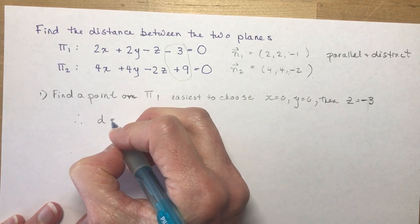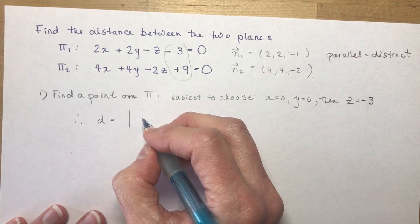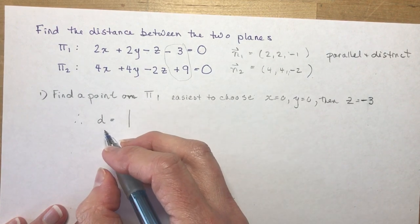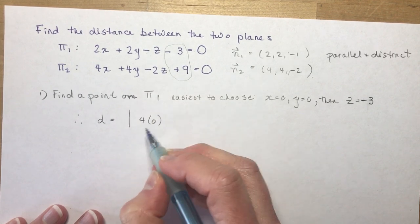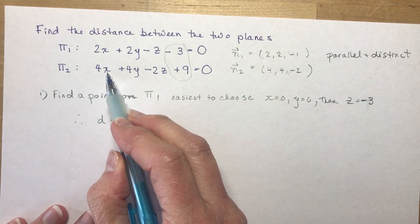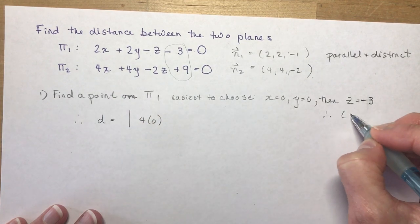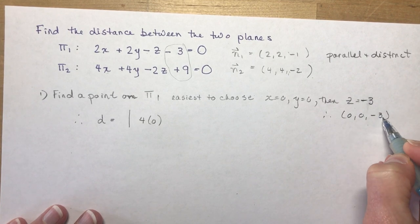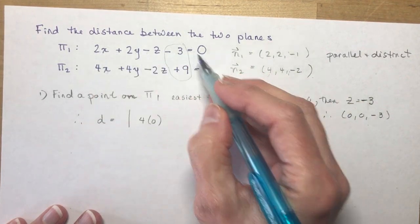Okay, so that means d is going to be equal to the magnitude of ax₀, by₀, cz₀, plus D. So I do a, so 4 times 0. Now make sure again that you're plugging your point into the second equation, right? You're not going to want to plug that into, I didn't write it out here, 0, 0, -3. So that's my x₀, y₀, z₀, and my ABC is going to be this one because I use this equation.